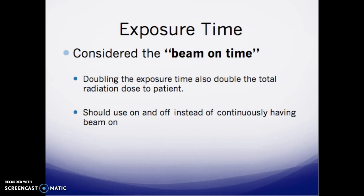Exposure time is the beam-on time. Doubling the exposure time doubles the total radiation dose to the patient. Fluoro should use an on-and-off pulsed approach — for example, if a doctor is waiting for the stomach to empty, they should tap the pedal on and off rather than continuously holding the beam on. Using pulsed fluoro reduces the direct beam-on time, which directly reduces radiation dose to the patient and operator.